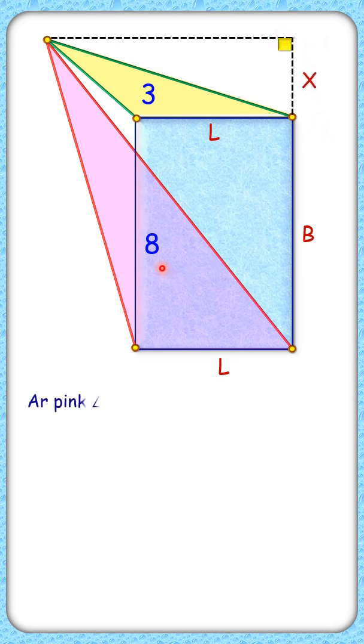Now the area of this pink triangle, that's half of base times height, and height is this vertical distance of the point from the base which is B plus X, and this is given as 8 centimeter square.